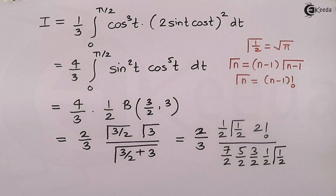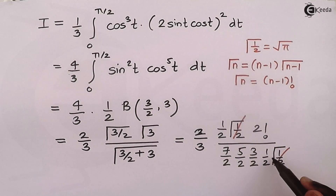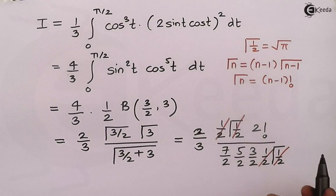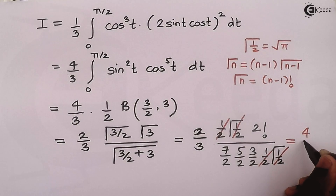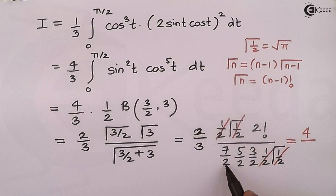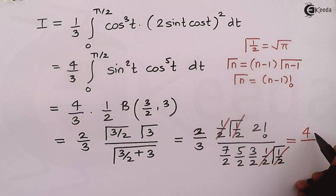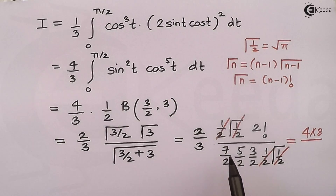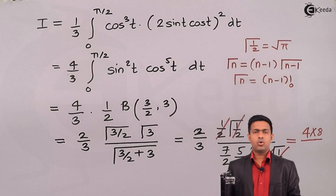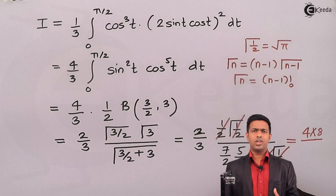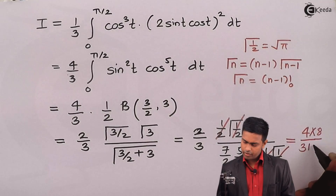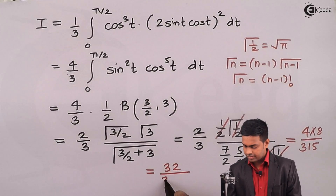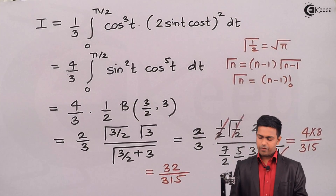After cancelling Γ(1/2), the numerator contains 2 × (1/2) × 2 = 2, and with the factor of (2/3) and 4 outside we get 8 in the numerator: 3 × 8 × ... giving 32 in the numerator. The denominator is 3 × 7 × 5 × 3 = 315. So the final answer is 32/315.